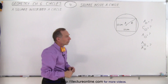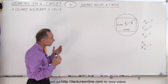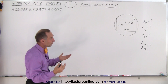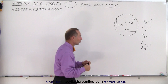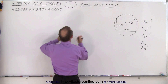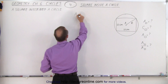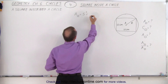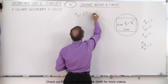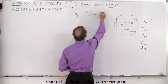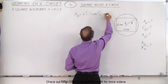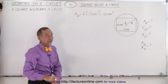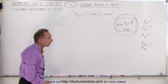We are given that the square is 10 centimeters by 10 centimeters. First of all, the area of the square is relatively easy to find. We can say that the area of the square is equal to the side squared. In this case the side is 10 centimeters, so it would be 10 centimeters squared, which equals 100 centimeters squared.